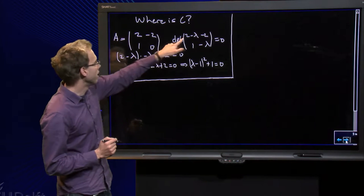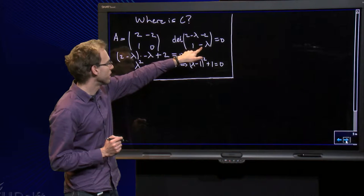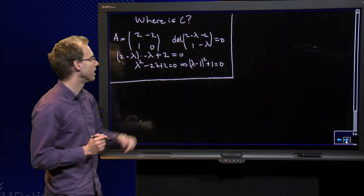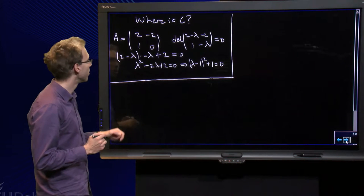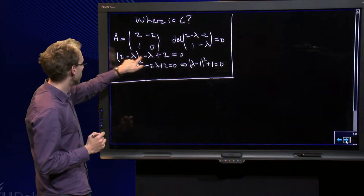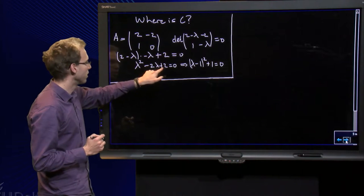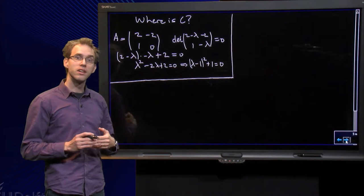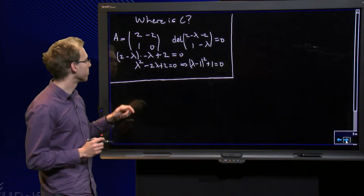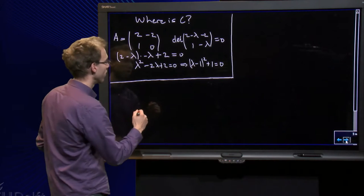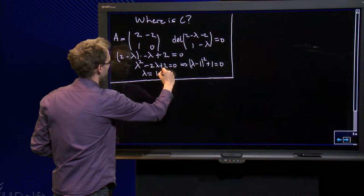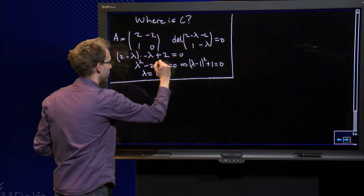And we find 2 minus lambda times minus lambda, for here, minus minus 2 times 1, so plus 2 equals 0. And we can factor out lambda minus 1 squared plus 1 equals 0, and we find lambda equals 1 plus or minus i.